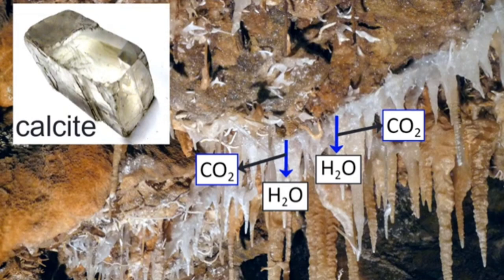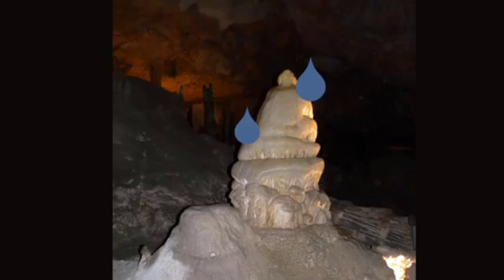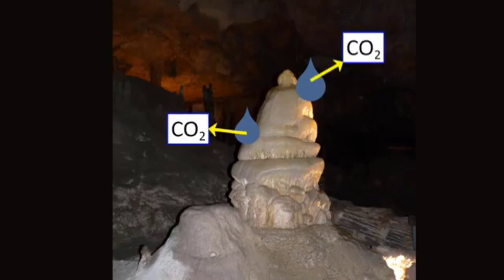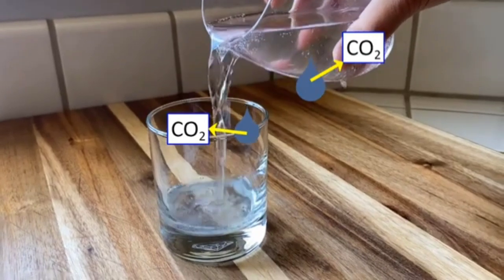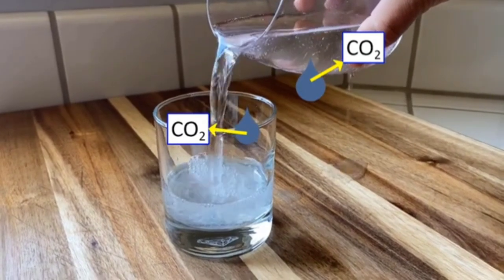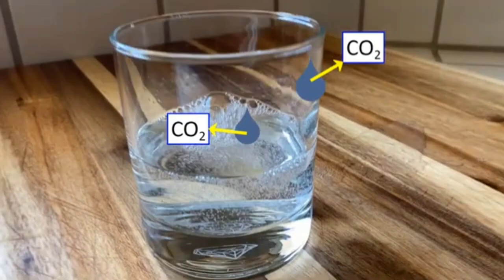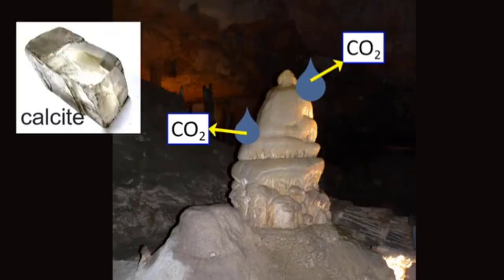Small crystals will form around the water droplet and add to the thickness and length of the stalactite that's forming. When a drop of that water later hits the ground under the stalactite, more carbon dioxide gas will leave the water and more calcite will precipitate and form the stalagmite. It's just like when you shake your soda can — the agitation produced when the water drops on the floor allows more of the carbon dioxide to leave and a little bit of calcite to precipitate.